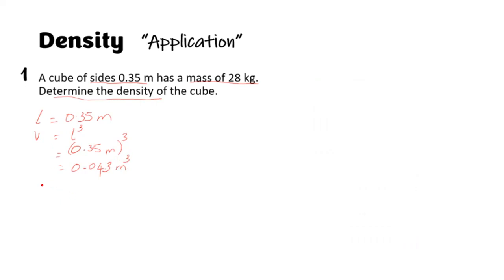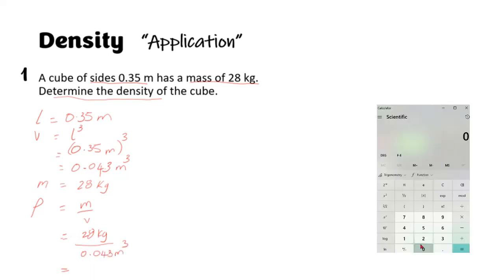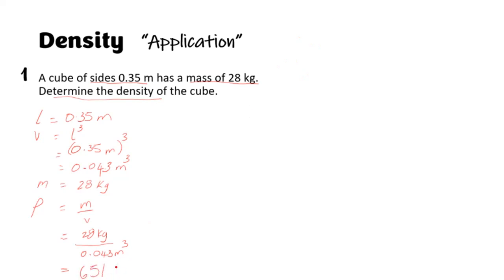And then we got mass, and my symbol is m. So now we write our formula and substitute. Notice I keep everything in line. Excellent. Now that's the answer for our density.